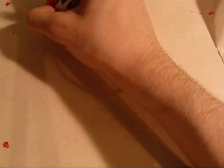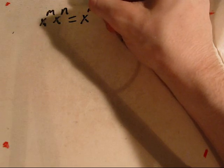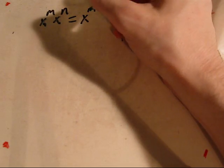Now, exponents have certain properties that they follow. For example, a base to an exponent m times the same base to another exponent n will be the base to the m plus n power.